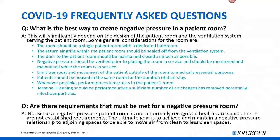What is the best way to create negative pressure in a patient room? This is dependent on the current layout and ventilation system. Some general key concepts: the room should be a single patient room, ideally with a dedicated bathroom. The return air grille within the patient room should be sealed off from the ventilation system. The door to the patient room should be maintained closed as much as possible.